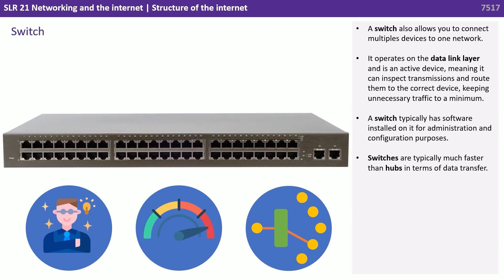Finally, we have a switch. This also allows you to connect multiple devices to one network. It operates on the data link layer and is what's called an active device, meaning it can inspect transmissions and route them to the correct device, keeping unnecessary traffic to a minimum. A switch typically has software installed on it for administration and configuration purposes.